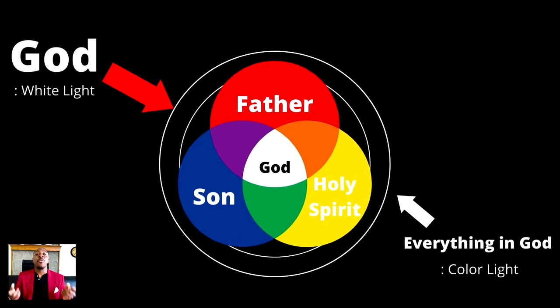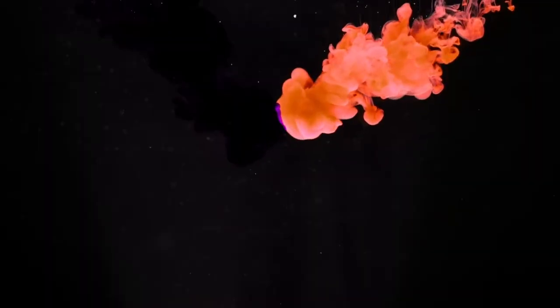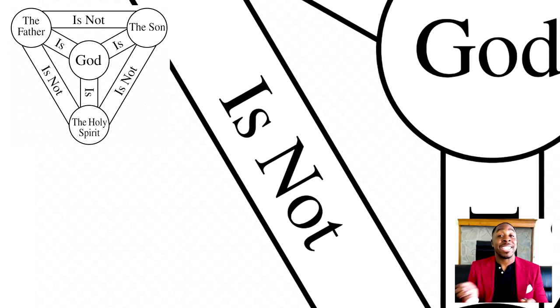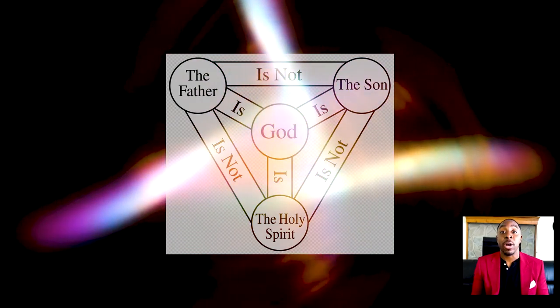But within white light, within God, were multiple parts. The red light is not the green light, and the Father is not the Son. The orange light is not the blue light. The Son is not the Holy Spirit. And the indigo is not the green light. The Holy Spirit is not the Father. But the summation of all the different light wavelengths is the white light. The whole part is God. There are not three different people, but one person of God with three different parts.